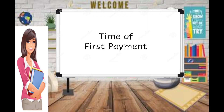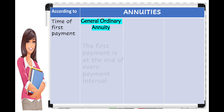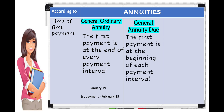Annuity is also classified according to the time of the first payment. For general ordinary annuity, the first payment is at the end of every payment interval — for example, you get the item today on January 19 and your first payment will be on February 19, at the end of the first interval. For general annuity-due, the first payment is at the beginning of each payment interval — for example, you get the item today, January 19, and your first payment is also today, January 19.